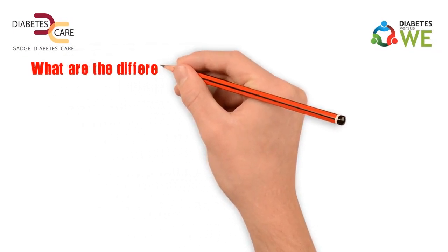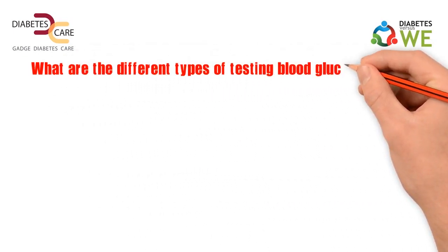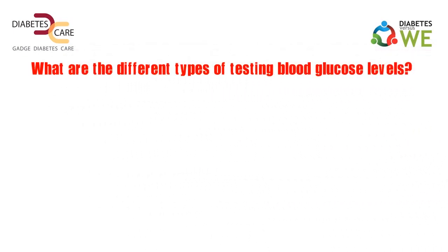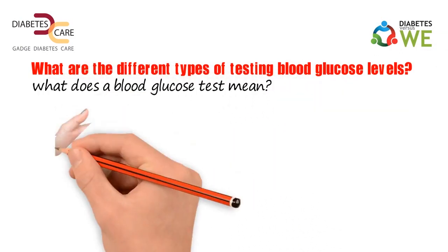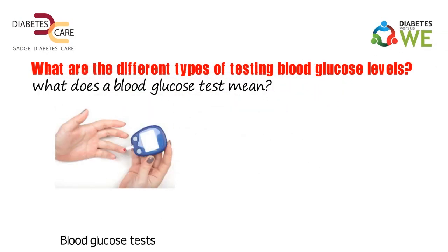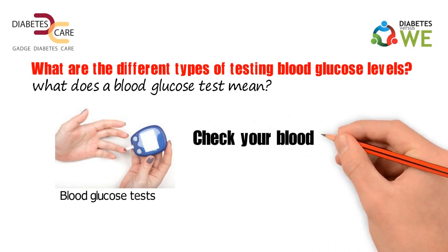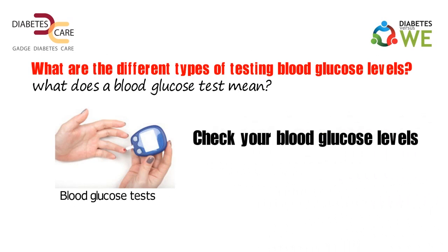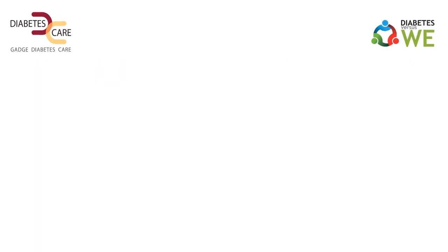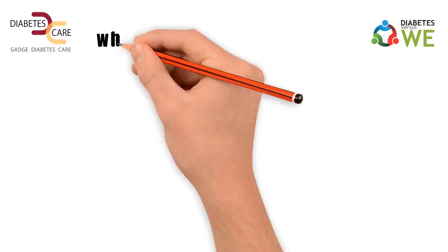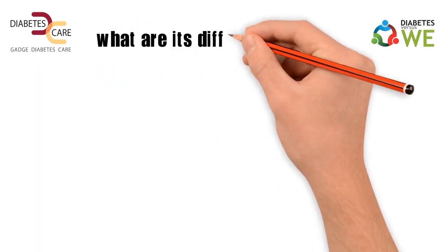What are the different types of testing blood glucose levels? Let's understand what a blood glucose test means. Blood glucose tests are used to check your blood glucose levels, diagnose diabetes, and monitor diabetes. So, what are its different types?